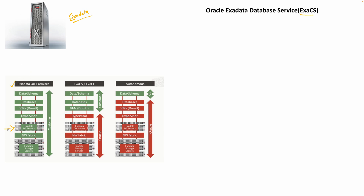Inside that rack you will see certain database servers, or compute nodes as we call them, and you have storage servers - also called cell servers. Between the database servers and these storage servers there is a high-speed connectivity - InfiniBand, or IB. These days they are also using RoCE switches. On top of that you have the hypervisor, where you can build DOM-Us or virtual machines or VM clusters, and on top of that you can have your database.